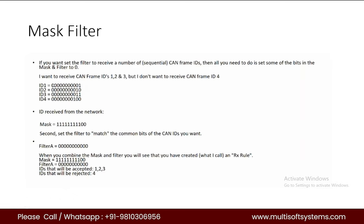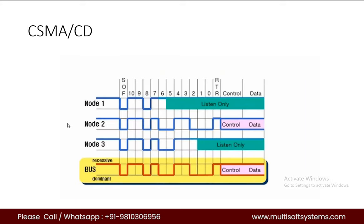So that is how the mask filter works — ID 4 is discarded and the three relevant messages are taken at the HMI. After that in CAN we also have something called CSMA/CD.